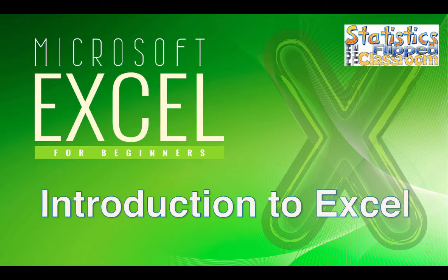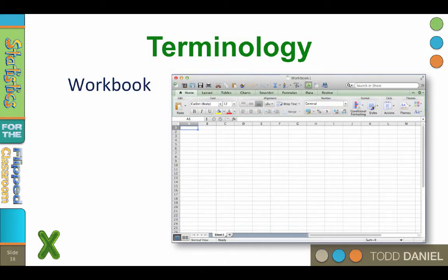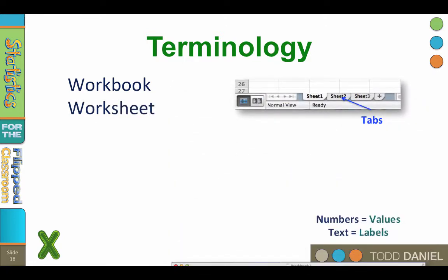Before using Excel, it is useful to understand the terminology that we will be using in this class. Open your copy of Excel on your computer desktop and follow along with these terms. The Excel spreadsheet document is called a workbook. Each workbook can consist of several worksheets. The worksheets lay on top of each other like a flip pad of paper. In some versions of Excel, by default, a workbook will contain three worksheets, only one of which you need for a statistics problem.